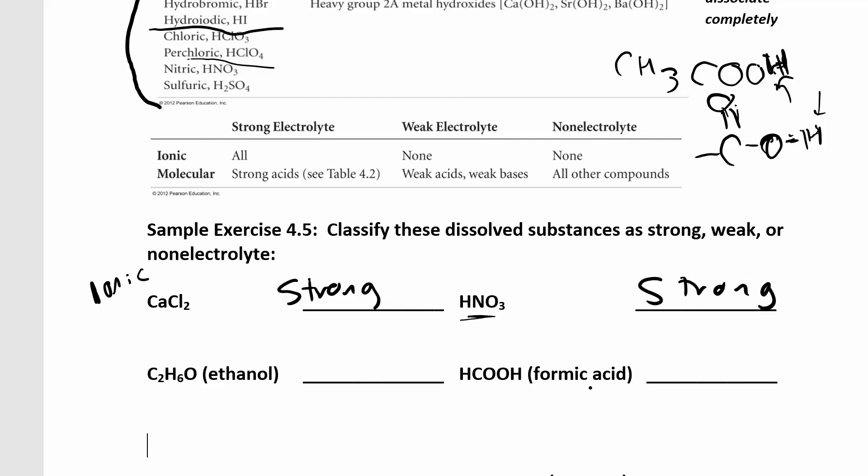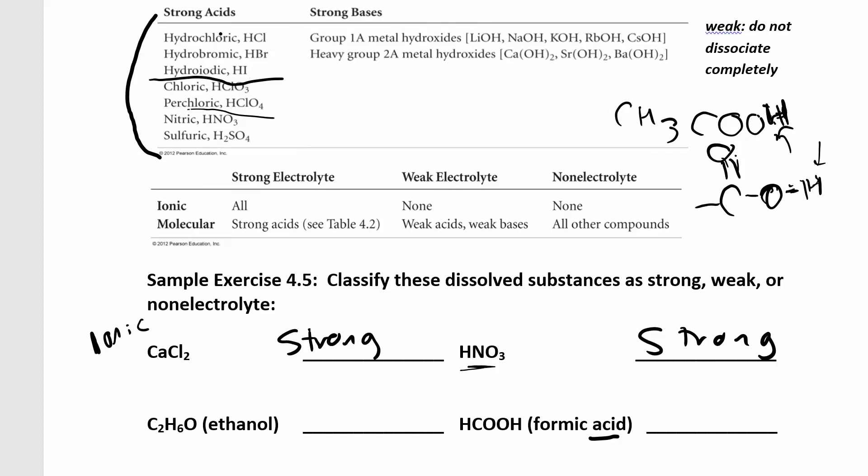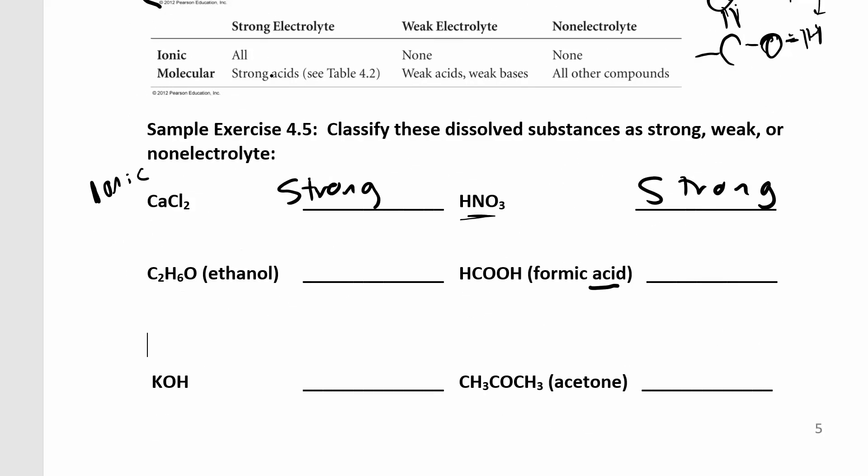Formic acid, right, it's telling you right there that it's an acid. Formic acid is not on the list of strong acids, so that would make it a weak acid because you know it's an acid because it says acid there.